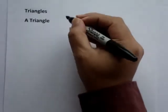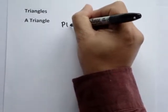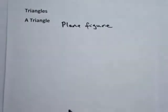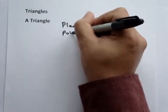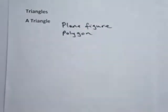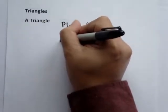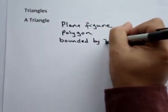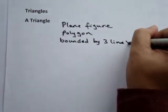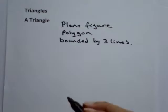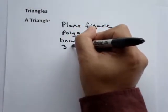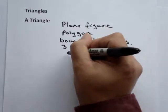Hi and welcome to this video on triangles, Maths Made Easy. A triangle is a plane figure and it's a polygon, and it's bounded by three lines. A triangle has three sides, so bounded by three lines means it has three sides and three vertices.